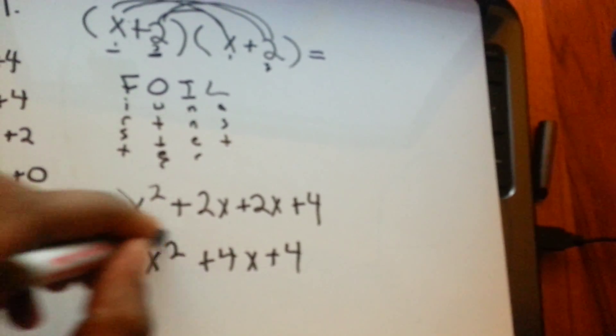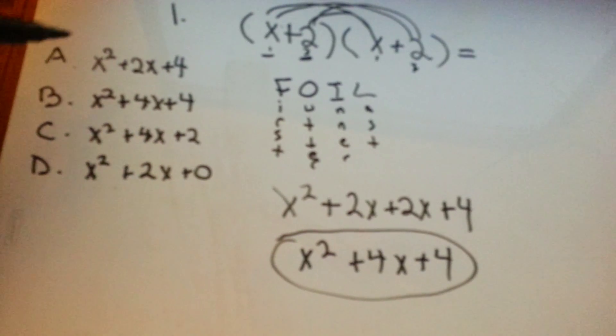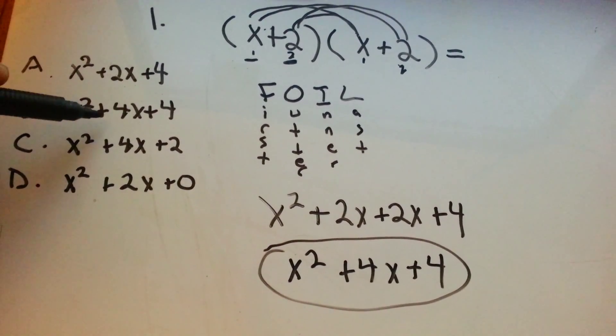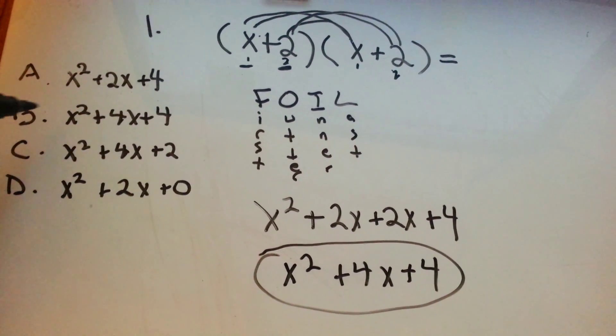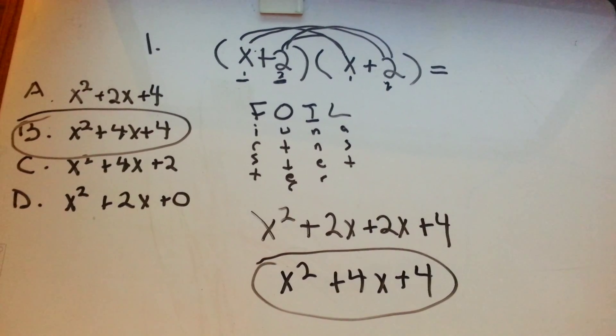And that's your final answer. You check over at the answer, see if that's there. x squared plus 4x plus 4 equals answer B. And there you have it.